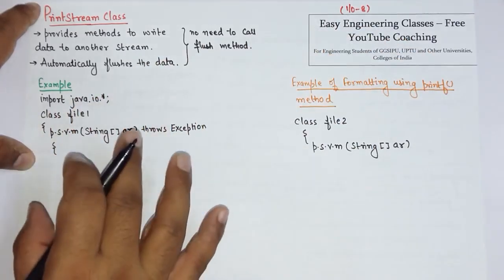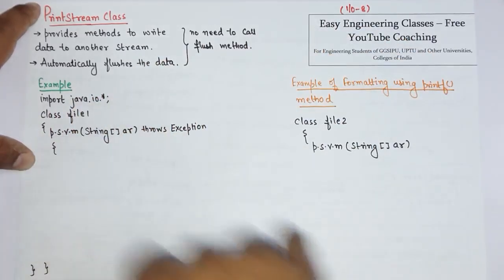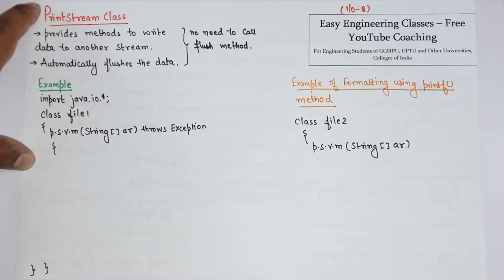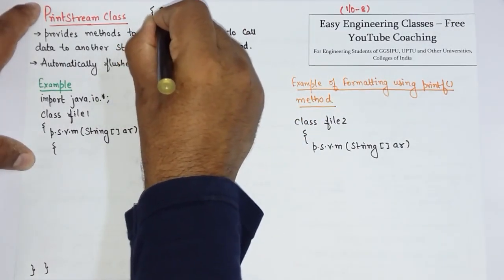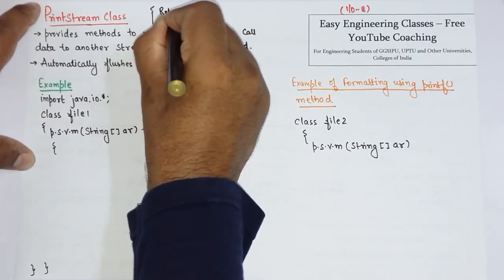There are many different methods that are used in PrintStream class, such as public void print(boolean b), public void print(char c), and so on. You can refer to the documentation of PrintStream class for the complete list of methods.